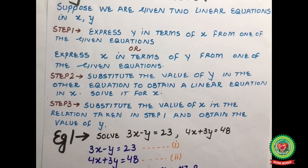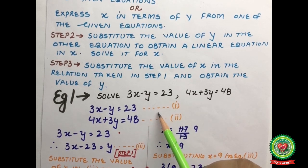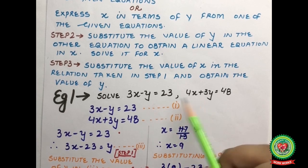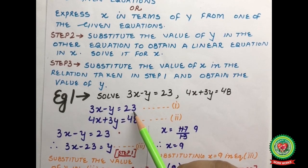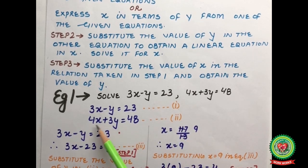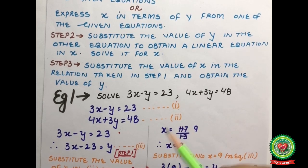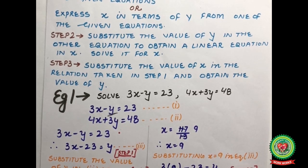Example 1: Solve 3x minus y equals 23 and 4x plus 3y equals 48. We label these as equation number 1 and equation number 2 respectively. We will solve using the substitution method. Looking at equation number 1, the variable y has no coefficient, so we will express y in terms of x from equation number 1.